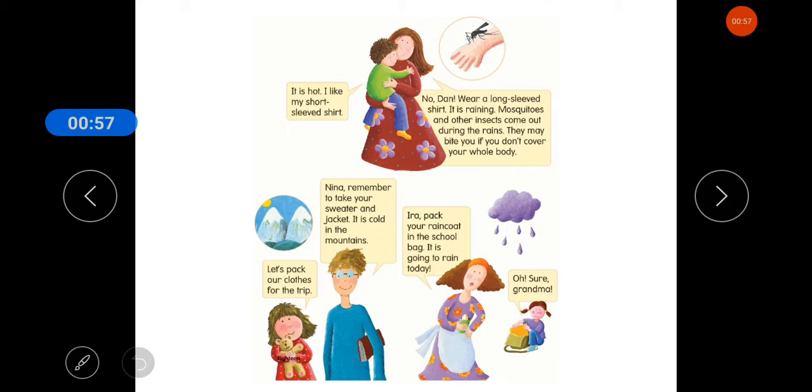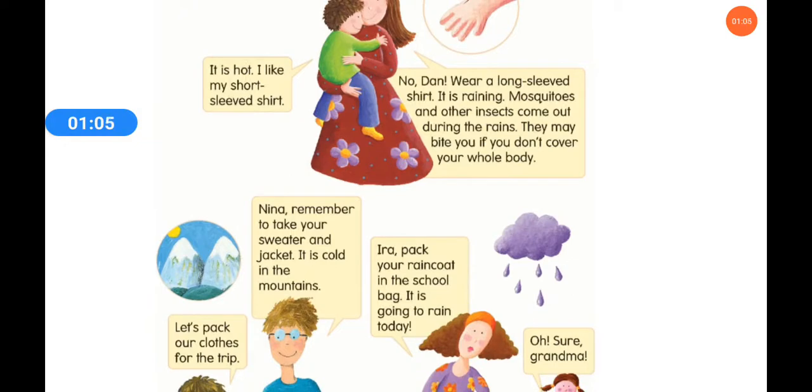So his mother says, no Dan, wear a long sleeve shirt. It is raining. Mosquitoes and other insects come out during the rain. They may bite you if you don't cover your whole body. So his mother says that you should wear a long sleeve shirt because it is rainy season. And in this season there are insects also more. So the mosquitoes will bite you if you don't wear a full sleeve shirt, then you don't wear your whole body cover.